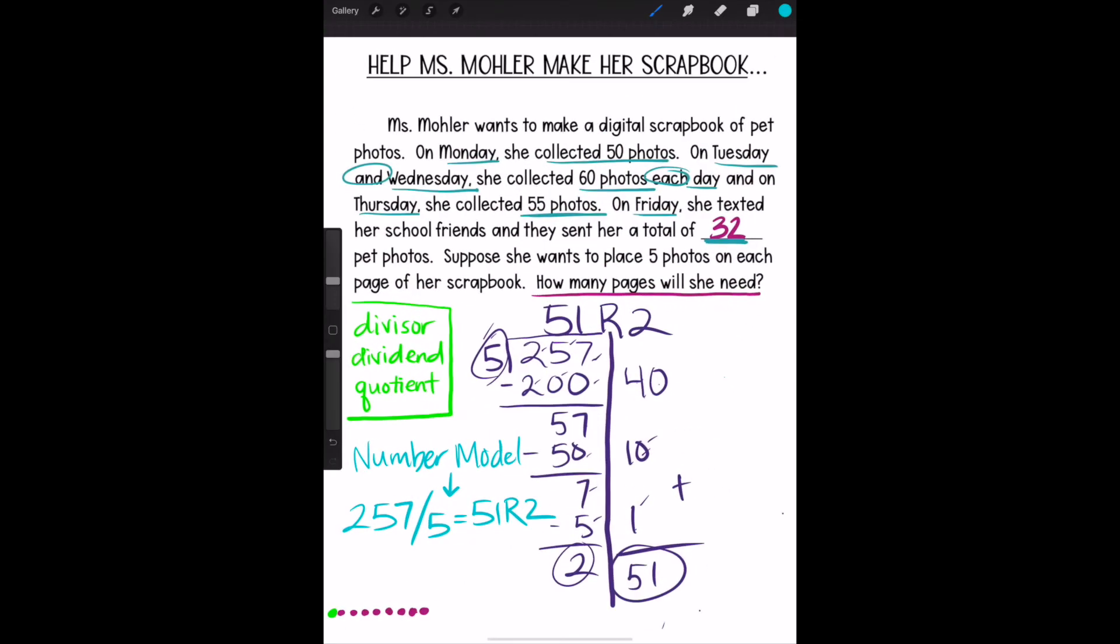It's finally time to interpret our remainder. For our number story, our number model is 257 divided by 5 equals 51 remainder 2. And we need to decide how many pages I will need for my scrapbook. So I definitely know that I need 51 pages. However, what should I do with the 2 that are remaining? If you were thinking that I need to make 1 more page and place those 2 pictures on it, you got it. So now we know that I will need a total of 52 pages for my scrapbook.